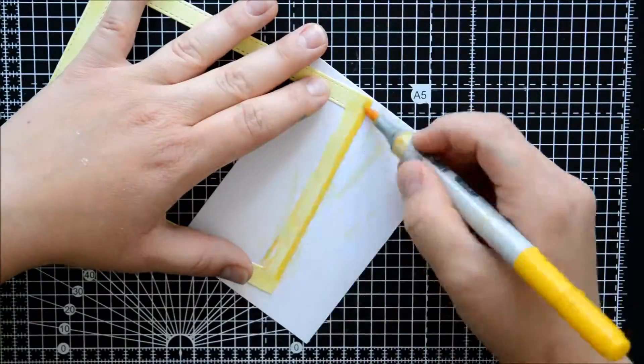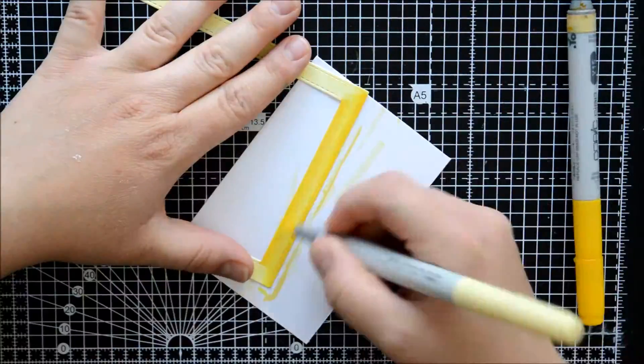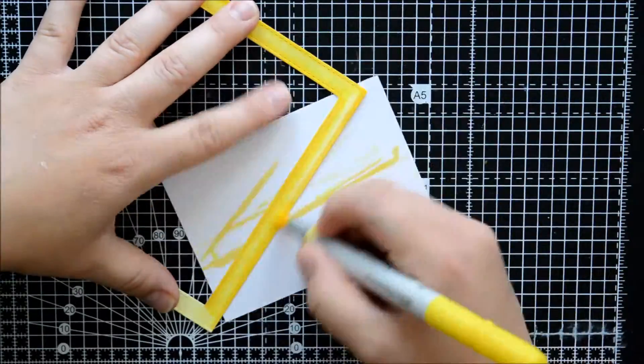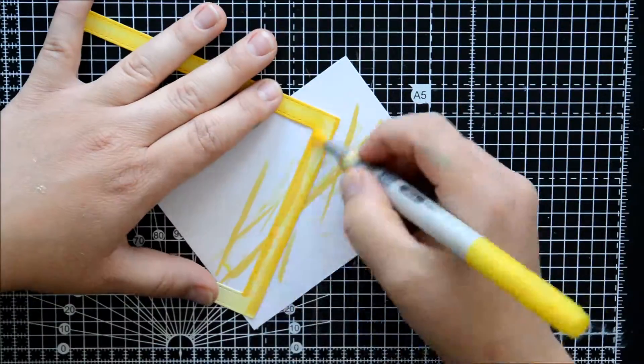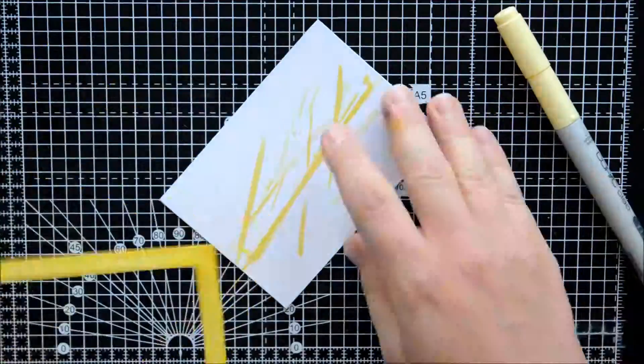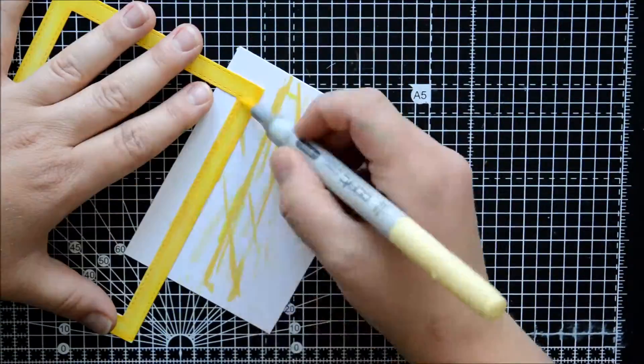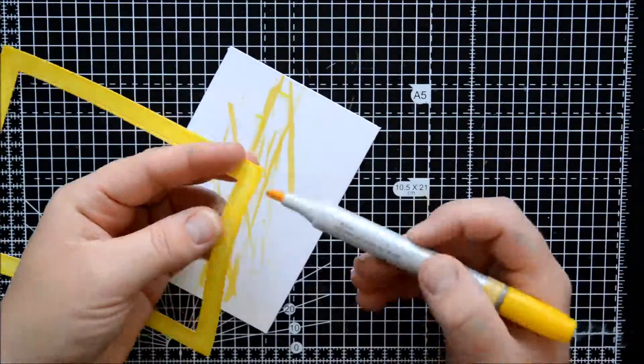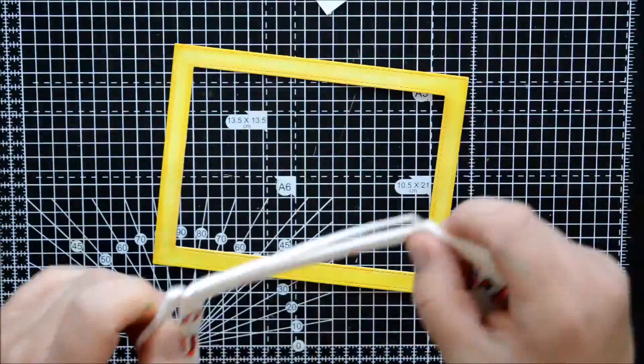Then I took my stitch frame and used my three yellow Copic markers and just coloured the frame. I tried to darken it a bit around the edges just to give it a little bit more depth. I go all the way around.